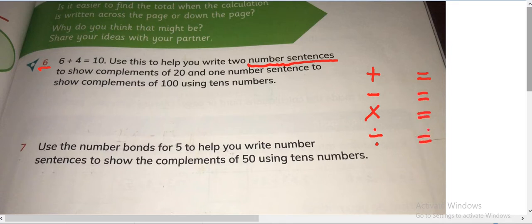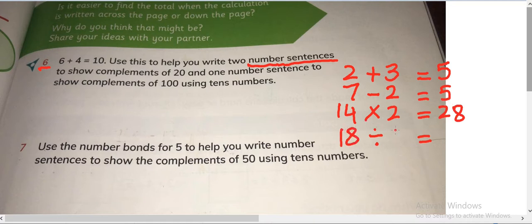For example, 2 plus 3 is equals to 5, 7 minus 2 is equals to 5, or 14 multiplied by 2 is equals to 28, or 18 divided by 3 is equals to 6. These all are number sentences.